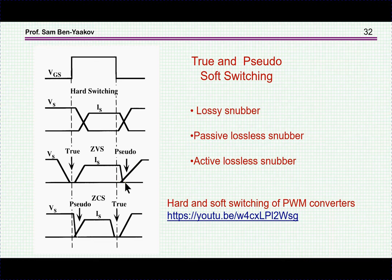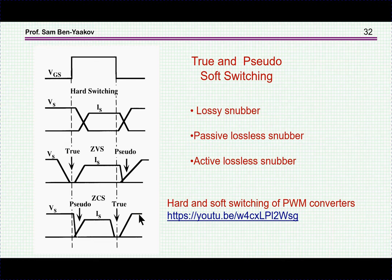Similarly, zero current switching (ZCS) brings the current to zero first and only then brings up the voltage. To achieve this in PWM converters you need an additional device, while in resonant converters you can achieve some of this behavior. I'm not going into this subject in this presentation, but there is a video on soft switching and I'll post the link at the page of this YouTube channel.